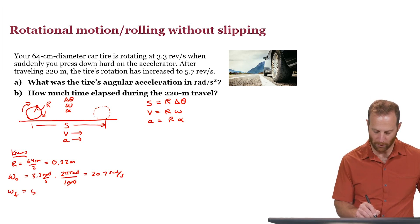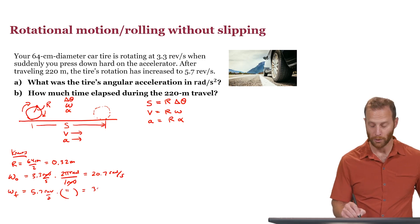We'll do something similar for the final. That's 5.7 revolutions per second multiplied by the same conversion factor will give us 35.8 radians per second.